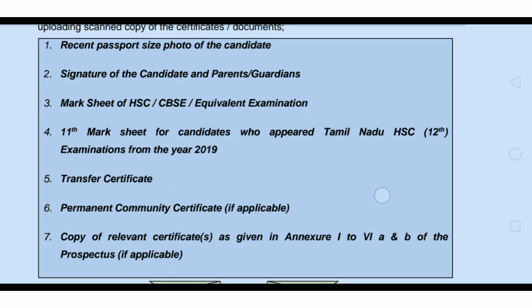That is the 11th mark sheet — okay? So you have the 12th mark sheet and 11th mark sheet. That is the transfer certificate, school transfer certificate. That is the permanent community certificate. If applicable, if you submit it, you will go to OC — open category. So make sure to upload the community certificate.